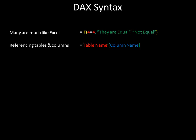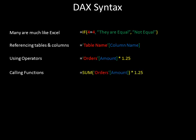In a DAX expression referencing a table and column, you write the table name — in single quotes if it contains spaces — followed by the column name in brackets. So it's table name, then column name in brackets — this is how we refer to a specific column in a table. For operators, we have things like an orders amount column multiplied by a factor of 1.25. DAX has the normal set of operators found in many languages. DAX also very often calls functions — for example, using a SUM function to sum the orders amount column, then using an operator to multiply the result out. Many functions are just like their Excel counterparts.